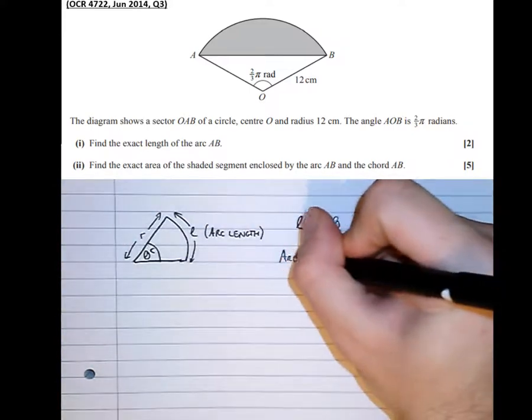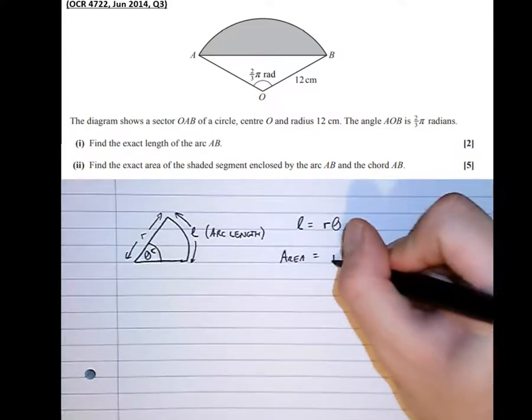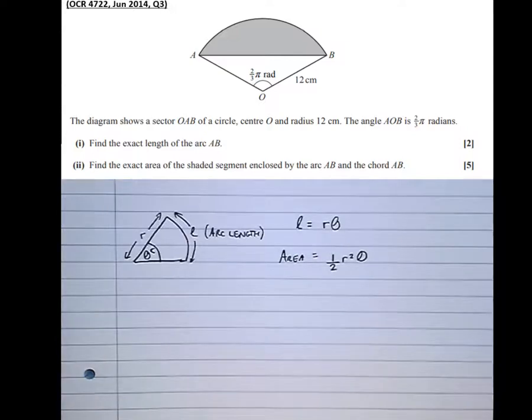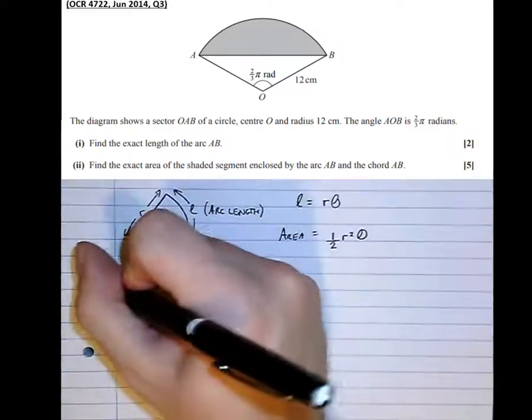And the area, that becomes a half r squared theta. Much more simple than the formula that you learnt at GCSE. So let's have a look at the question now. Let's apply these formulae.